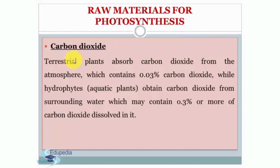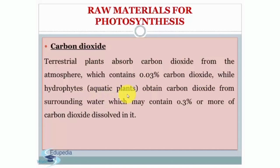Terrestrial plants absorb carbon dioxide from the atmosphere, which contains 0.03 percent carbon dioxide, while hydrophytes — aquatic plants — obtain carbon dioxide from surrounding water, which may contain 0.3 percent or more of carbon dioxide dissolved in it.